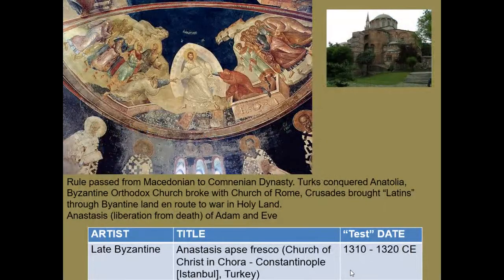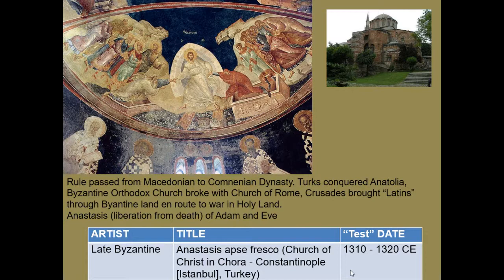In the late Byzantine period, you can really see the roots of the Italian Renaissance beginning to happen. This is the Anastasis Apse Fresco from the Church of Christ in Chora in Constantinople, well after the era of Iconoclasm. We can see that Christ has gone on a mission — he's actually broken the gates of hell, shattered the chains, and removed the coverings of the sarcophagi housing Adam and Eve. You can even slightly detect the figure of the devil below, in a slightly darker skin tone, in chains, with keys and broken chains and broken doors surrounding him.